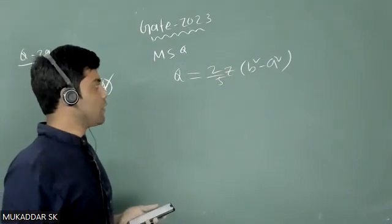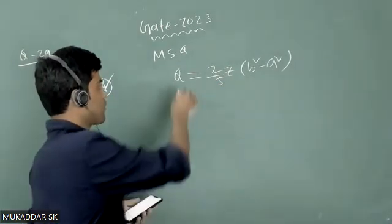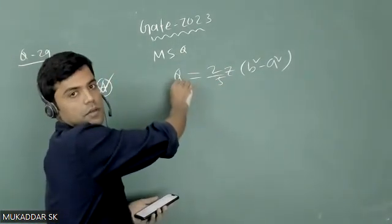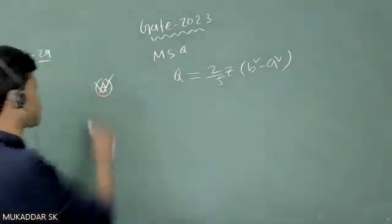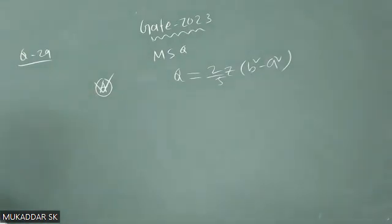So in the deuteron case, this Q quadrupole moment is non-zero because it's a non-spherical case where B ≠ A. That is why option A is correct.